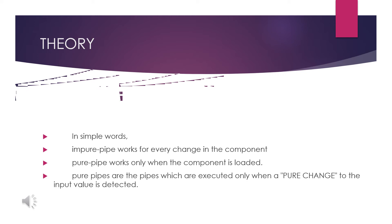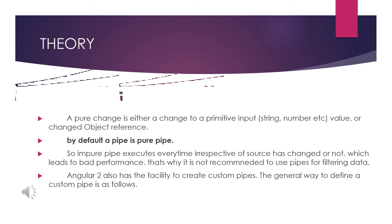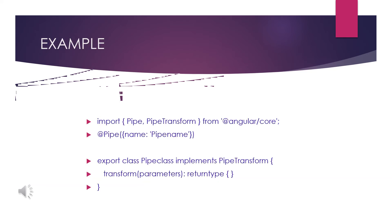By default, pipes are pure. If infinite detection occurs, the change means it will be an impure pipe. I have given a simple class and I have explained these meanings, so just go through it for your reference.